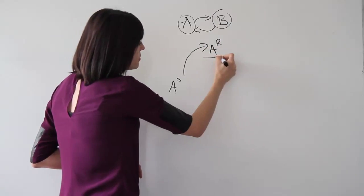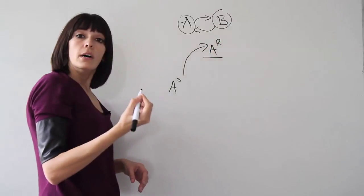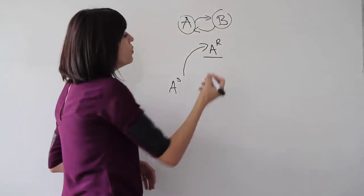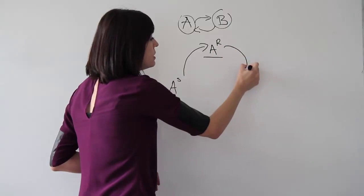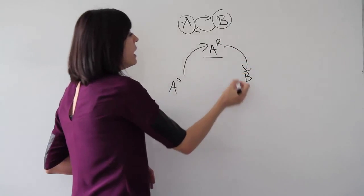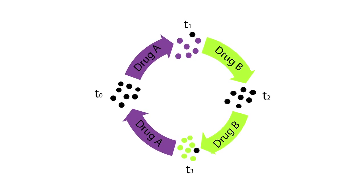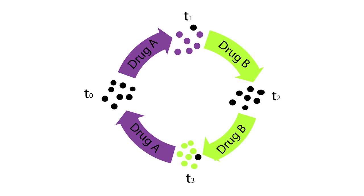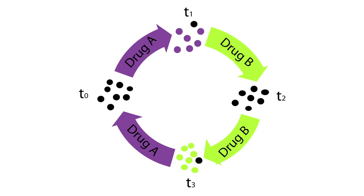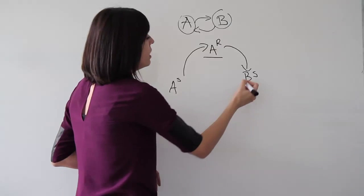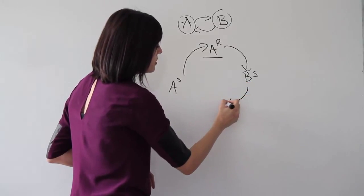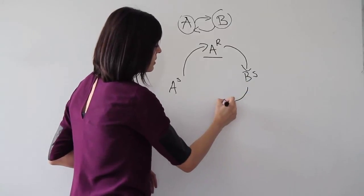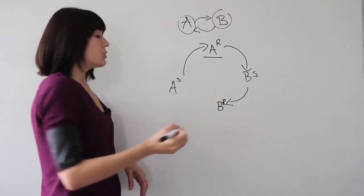Eventually when the drug A becomes ineffective, we can switch our treatment to drug B and target selectively the resistant cells. After some time, when bacteria also develop resistance to drug B, we can switch again our treatment to drug A.